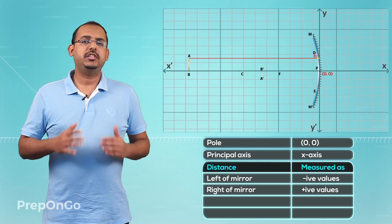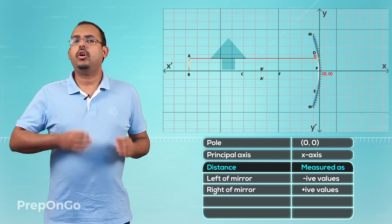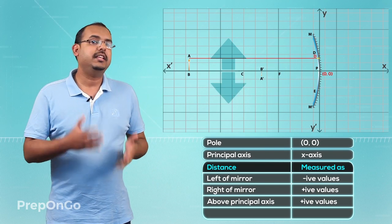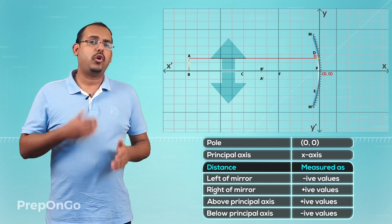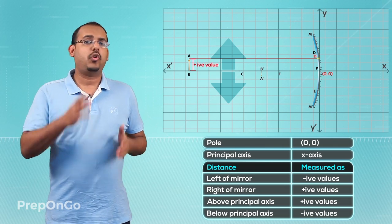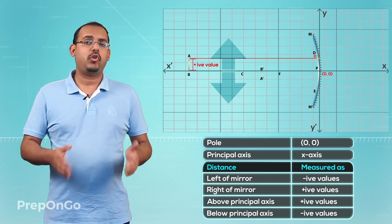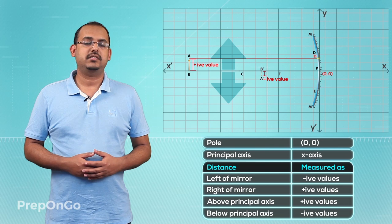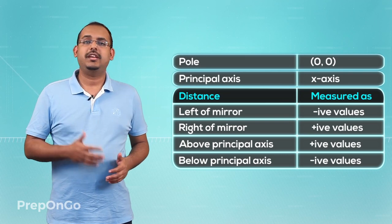All distances measured above the principal axis, which is also the x axis, are in the direction of the positive y axis, so they are always measured in positive values. All distances measured below the principal axis are in the direction of the negative y axis, so they are always measured in negative values. For a concave mirror, in all cases where it forms a real and inverted image, the object size is always measured in positive values and the image size is always measured in negative values. These are the main rules of sign convention used while solving ray diagrams for concave or convex mirrors.